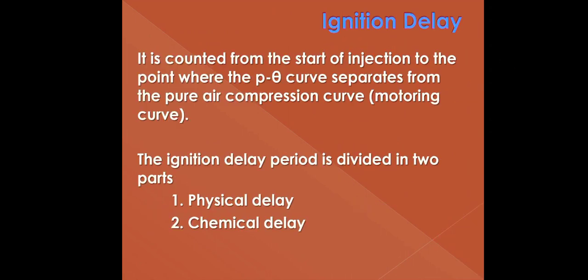Ignition delay is counted from the start of injection to the point where the P-theta curve separates from the pure air compression curve, called the motoring curve. The ignition delay period is divided into two parts: physical delay and chemical delay.